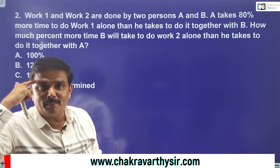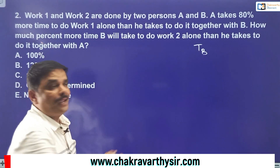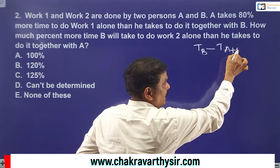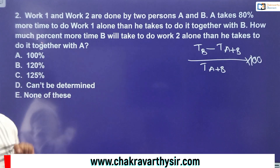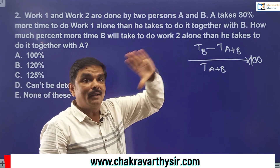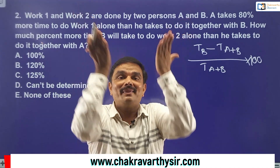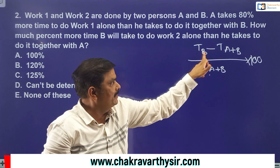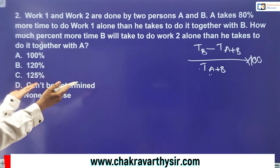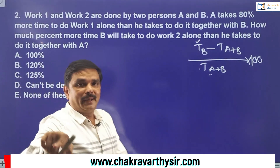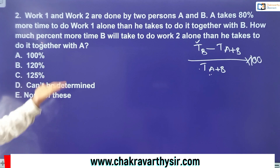What you need to find out is the comparison between the time taken by B alone and the time taken by A and B together. Specifically: time taken by B minus time taken by A and B together, divided by time taken by A and B together, multiplied by 100. Now, A takes 80% more time when compared to A and B together. With the help of the first statement alone, I can solve 90% of the question.